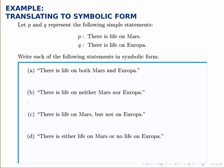Here we're given two simple statements, P and Q. P is the statement, there's life on Mars. Q is the statement, there's life on Europa. We want to write each of these given statements in symbolic form.